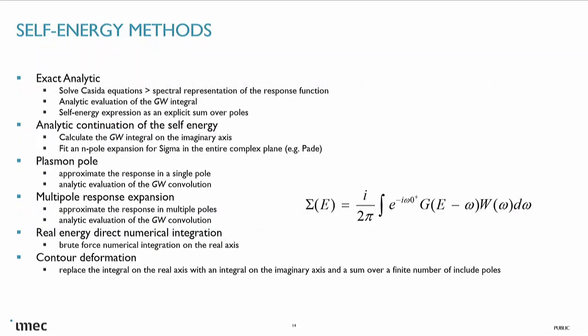That's where a lot of the misery starts. We need to calculate W — the screened Coulomb potential — and convolute it with the Green's function. There are about 500 different ways of doing this. The first one is the exact analytic approach, which you can do for molecules. For solids it's more complicated. What we actually do is calculate the exact spectral representation for W, and we have the spectral representation for G. All of a sudden, this complicated integral just becomes a sum — we do a bit of complex function theory and have an explicit result. The only approximation is the finiteness of the basis set.